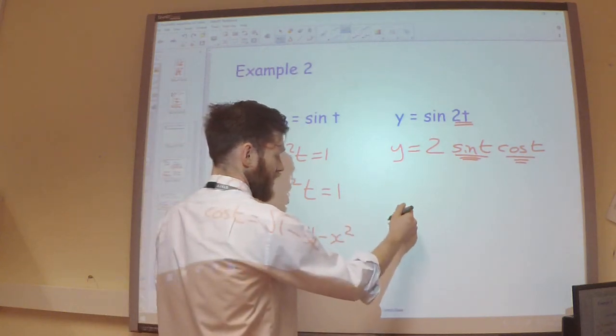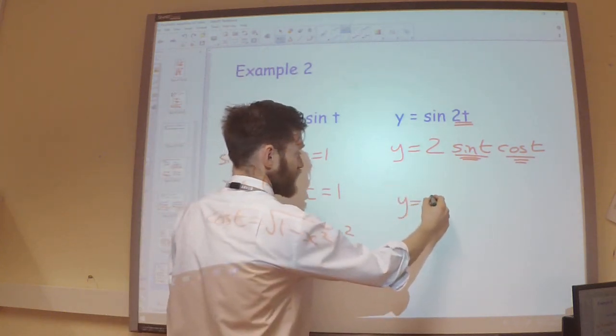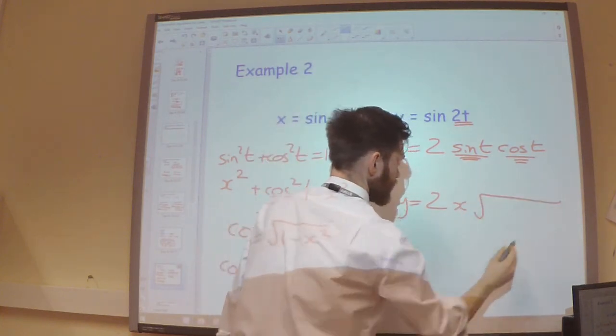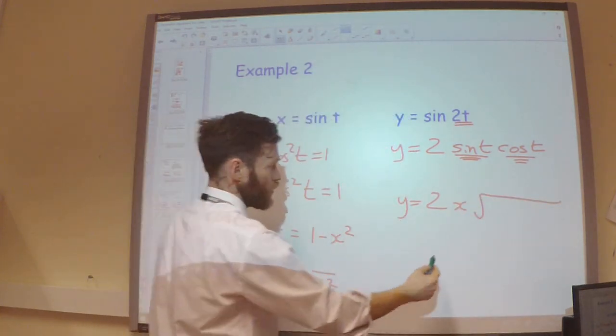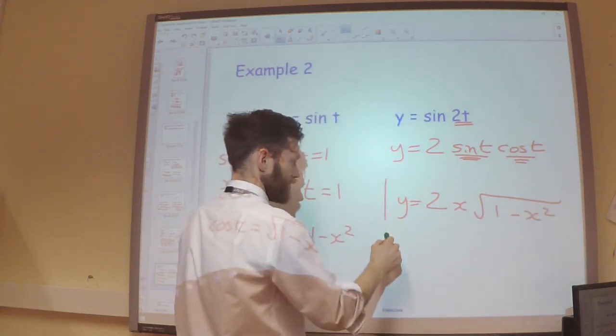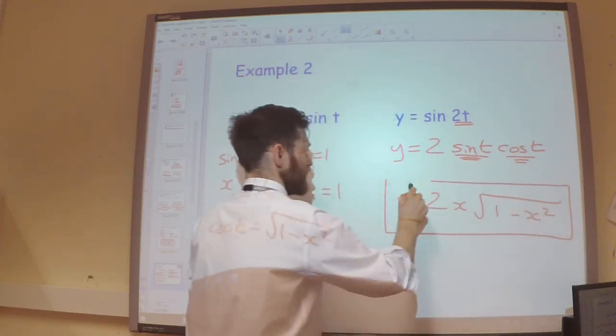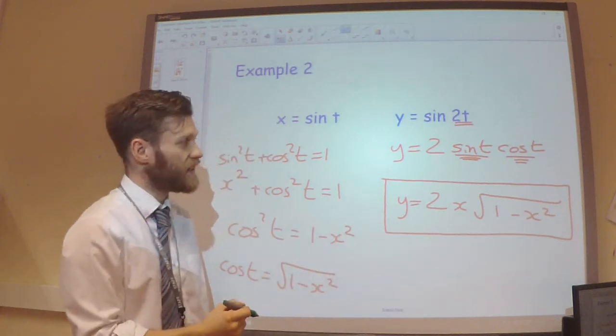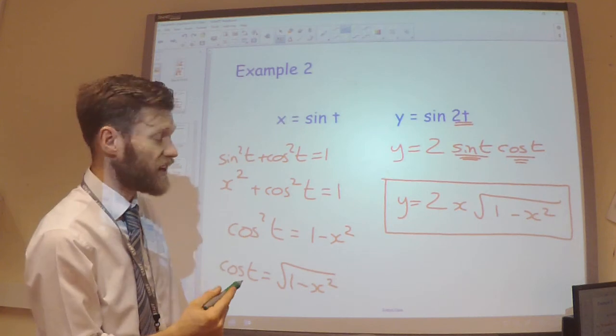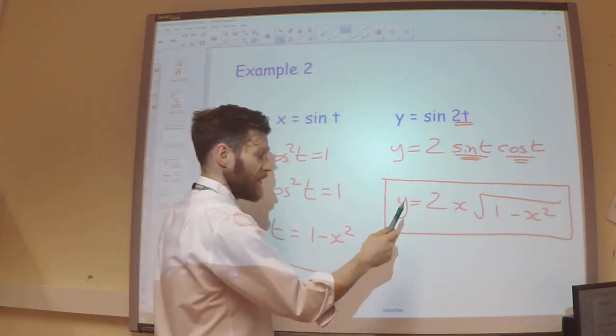So I can replace the sine t with x. I can replace the cos t with root 1 minus x squared. And so I can now say that y is equal to 2x multiplied by the square root of 1 minus x squared. And there we have it. I have eliminated the functions of t, and I've got my curve expressed only in terms of x and y.